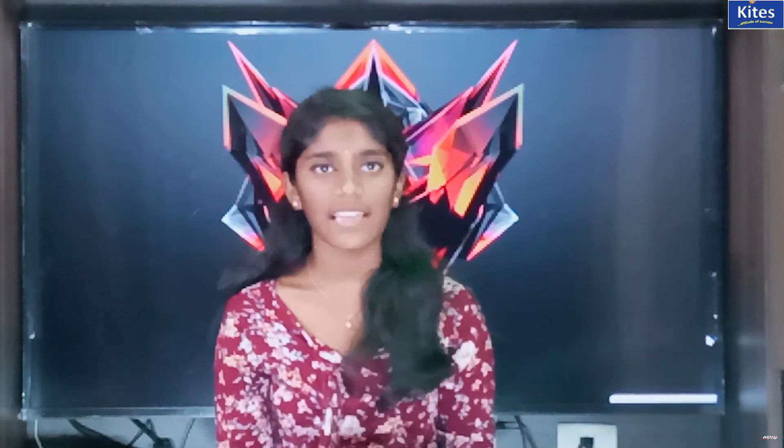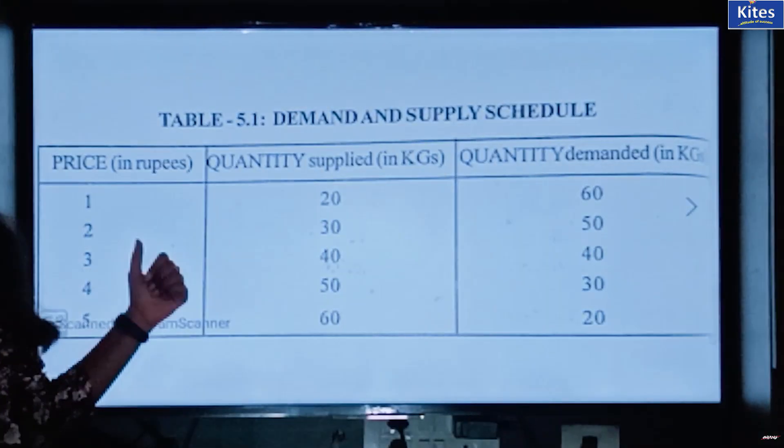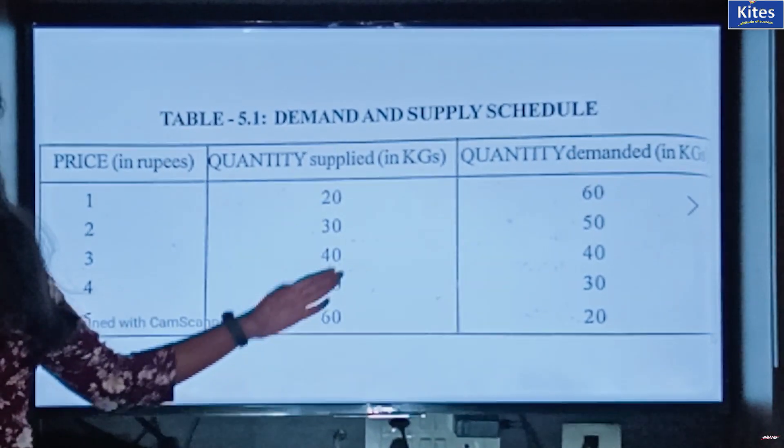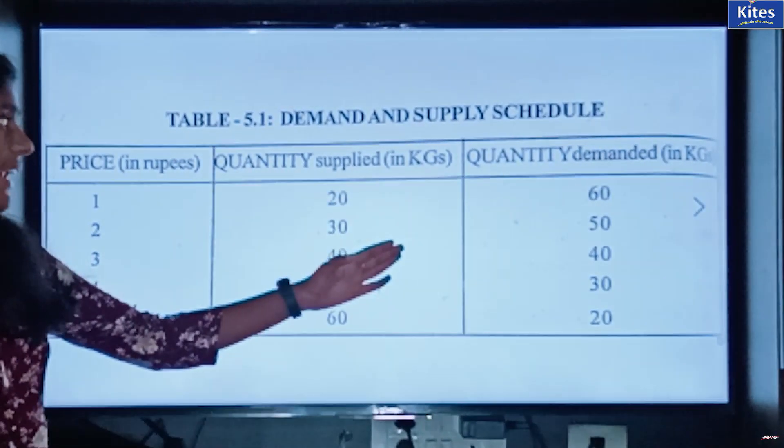The market brings a balance between what is brought to sale and what is demanded. You will be knowing how you get the equilibrium — the price is determined by the forces of your demand curve and supply. Here this is your price, this is your supply, and this is your demand.